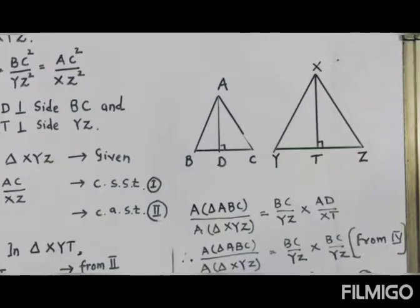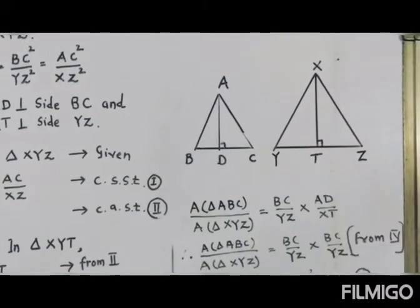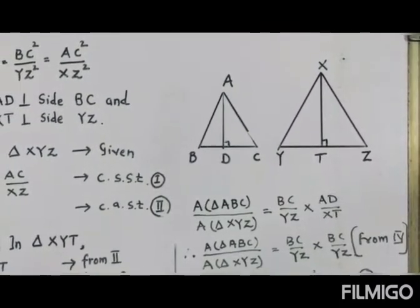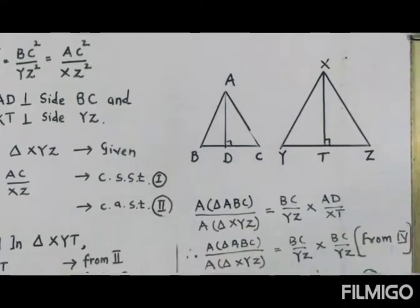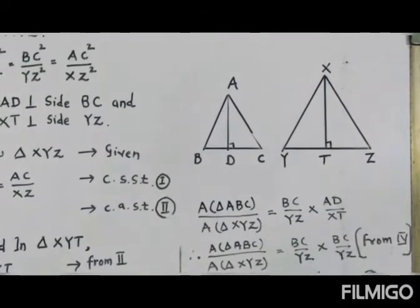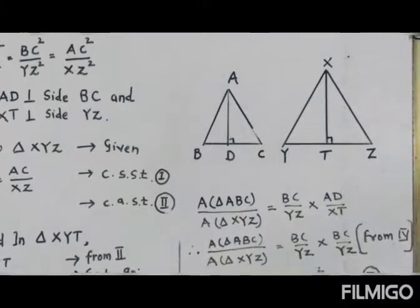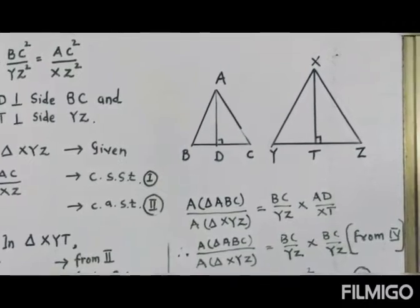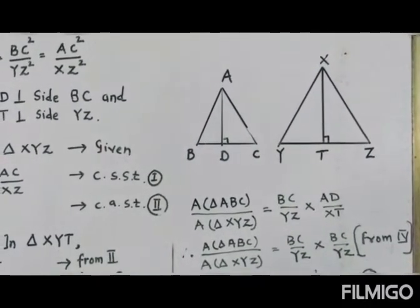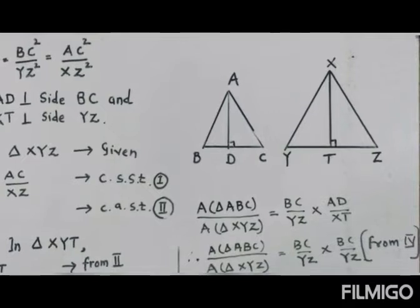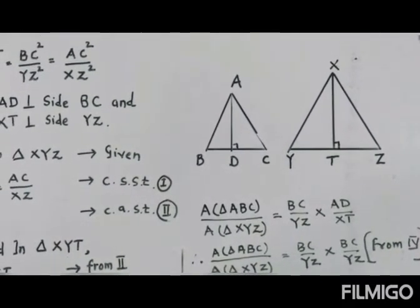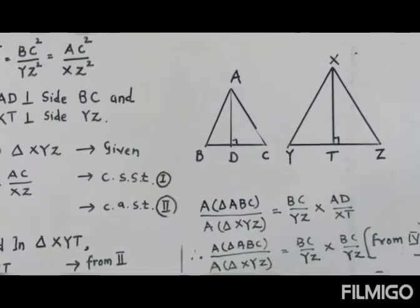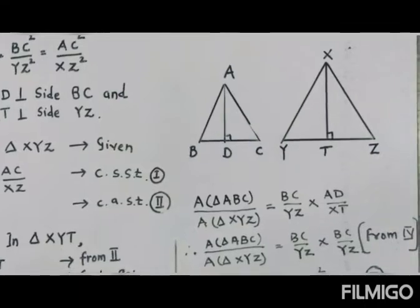Let me tell you the difference between similar and congruent. There is a vast difference — a cricket ball and a football are similar but not congruent. Whenever two triangles are similar, please keep in mind: their sides are in proportion and their angles are congruent.